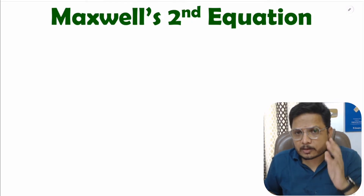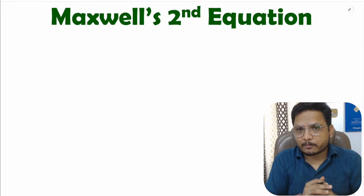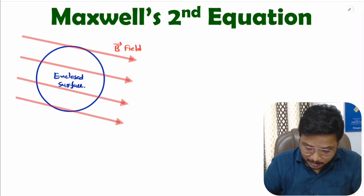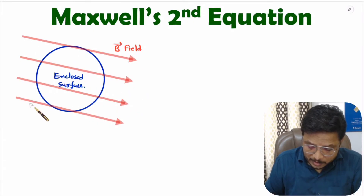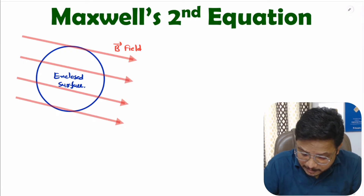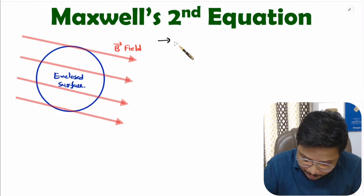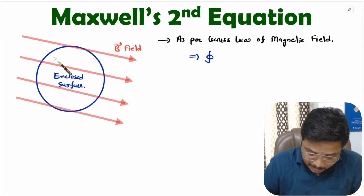Gauss's law for magnetic field states that for an enclosed surface, the total magnetic flux is zero. So if you have an enclosed surface, as you can observe here, then for that enclosed surface the magnetic flux is zero. The magnetic flux passing through the enclosed surface, that is the integration of B·dS, equals zero as per Gauss's law of magnetic field.